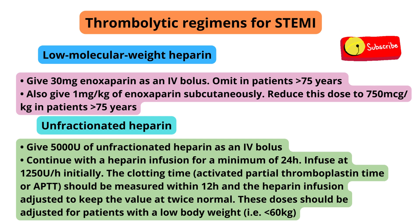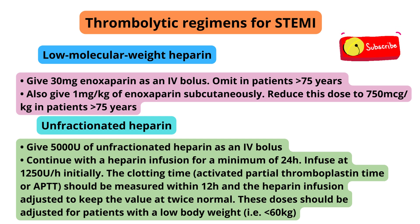Unfractionated heparin: give 5,000 units as an IV bolus. Continue with a heparin infusion for a minimum of 24 hours, infusing at 1,250 units/hour initially. The APTT (activated partial thromboplastin time) should be measured within 12 hours and the heparin infusion adjusted to keep the value at twice normal. These doses should be adjusted for patients with a low body weight of less than 60 kg.